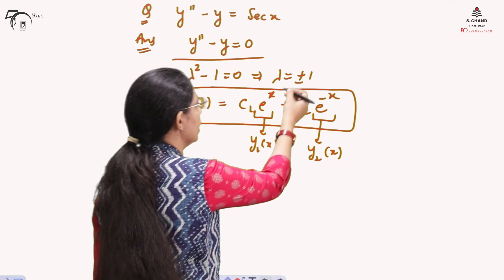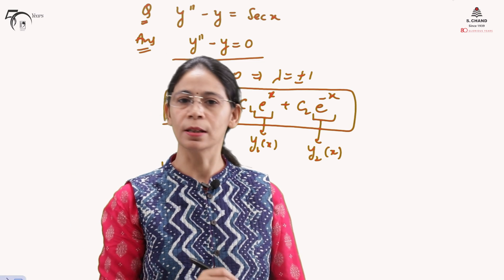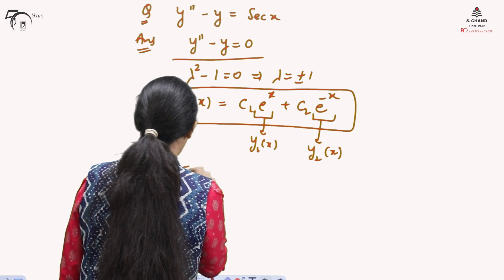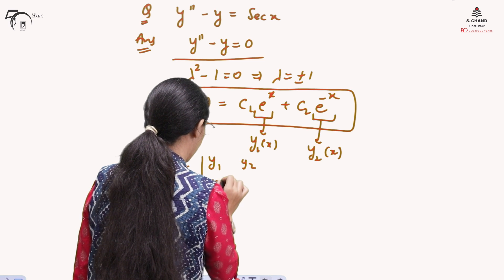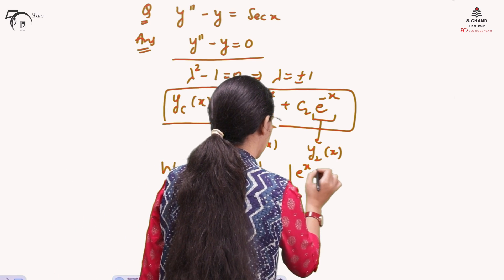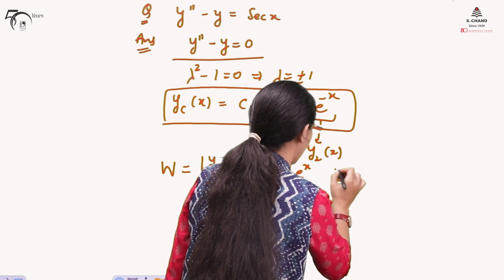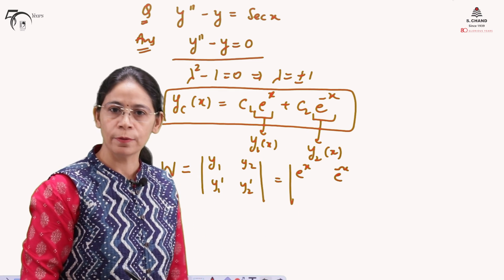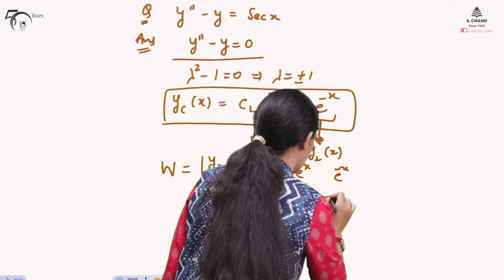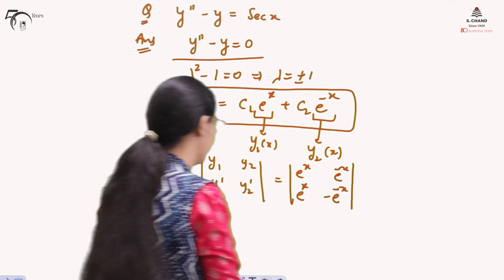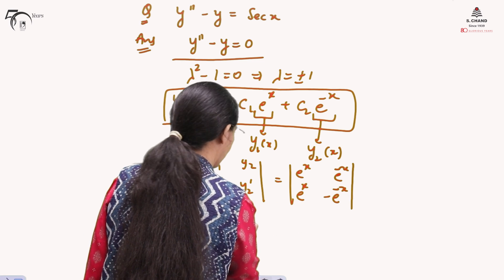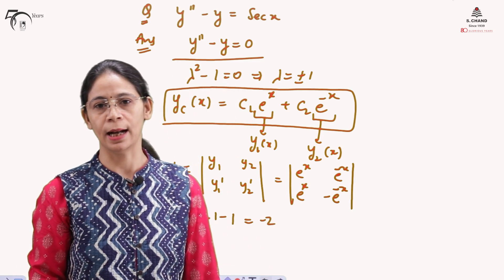Since the roots were real and distinct, there is a guarantee of a linearly independent solution — y₁ and y₂ will be linearly independent. The Wronskian W is the determinant of [y₁, y₂; y₁', y₂']. Here y₁ = e^x and y₂ = e^(−x), so the derivative of y₂ is −e^(−x). Taking the determinant gives minus 1 minus 1, which is minus 2.